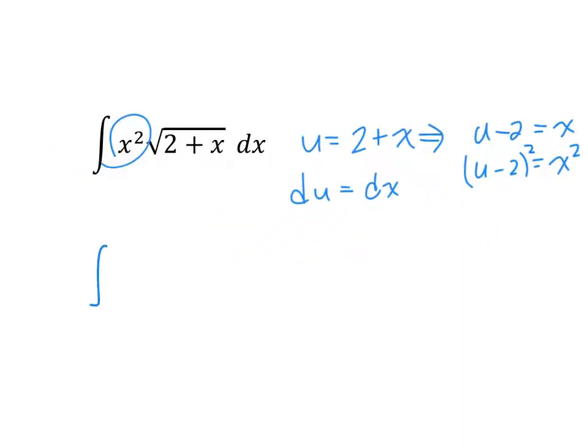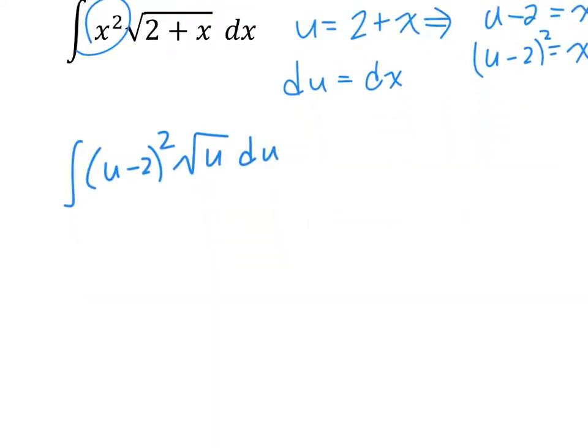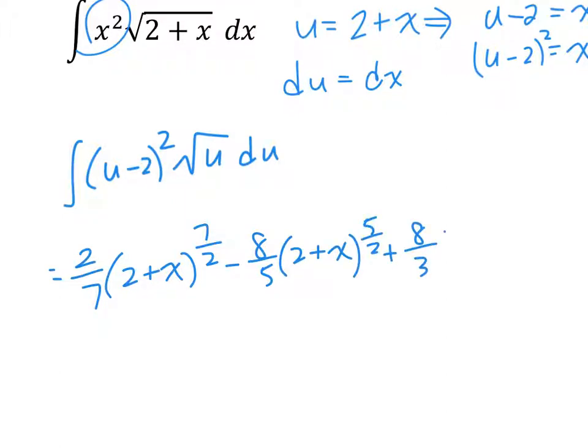Okay, substitute that back. This is u minus 2 squared, square root of u, du. All right, so going through the whole long process of integration, this is the final answer. 2 over 7 times 2 plus x to the 7 over 2 minus 8 over 5 times 2 plus x to the 5 over 2 plus 8 over 3 times 2 plus x to the 3 over 2 plus c. Good. That was long.